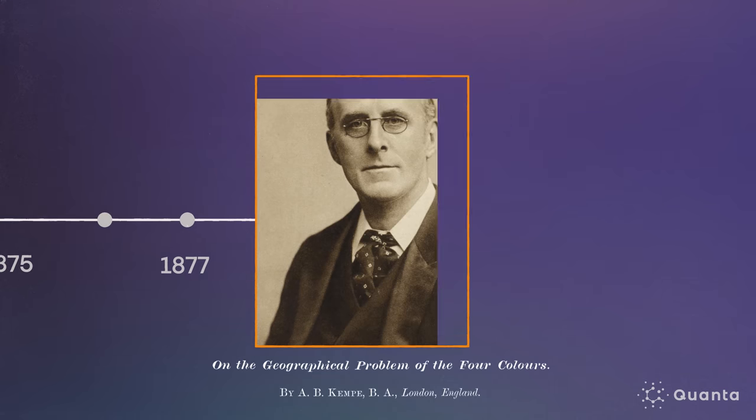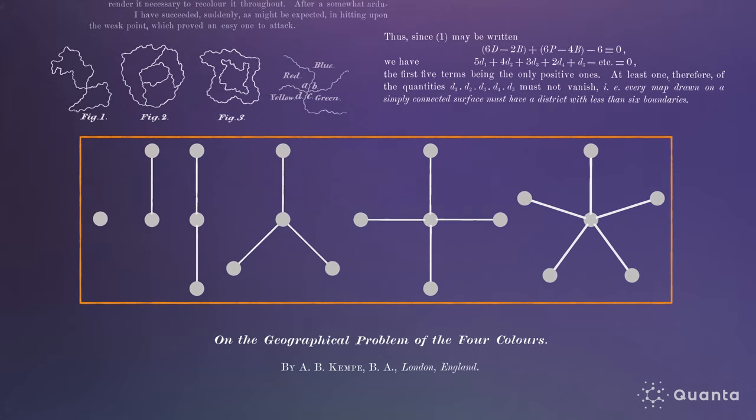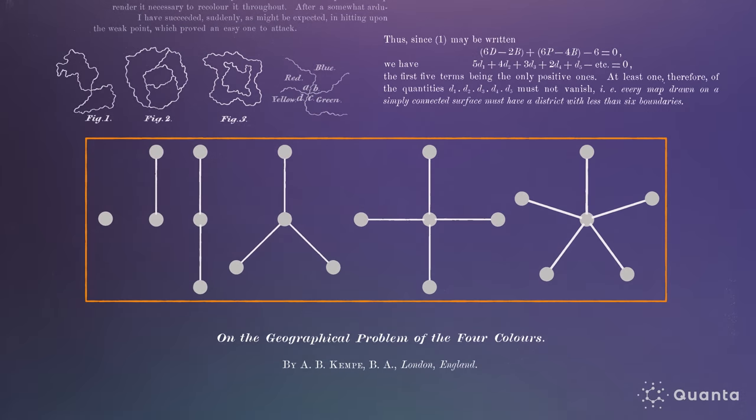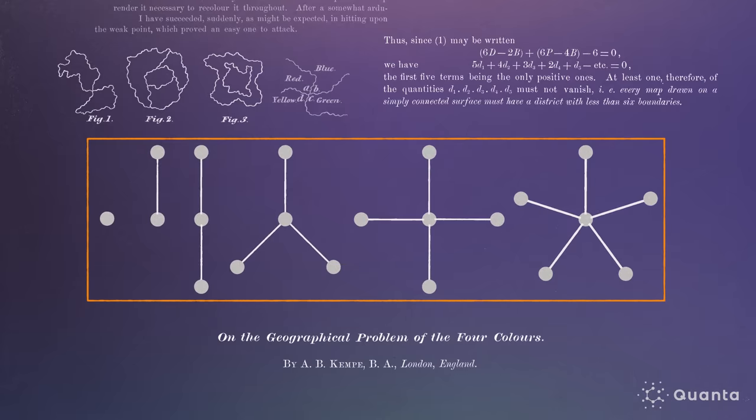Once Kemp had identified an unavoidable set, he set out to prove the four color theorem. To understand a surprising step of his method, first assume that the theorem is false. Kemp's proof is elegant and clever. Suppose we cannot color every map with four or fewer colors. Then there must be a smallest such map.